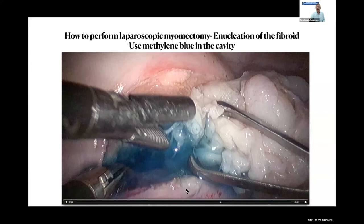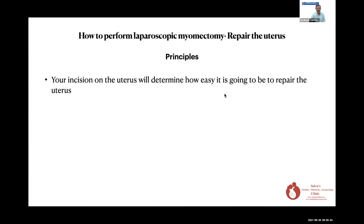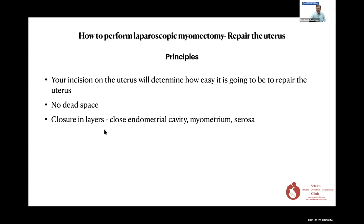Let me move on to repairing the uterus. Most of our time, besides morcellation, will be spent on uterine repair. The incision you make will determine how easy the repair is — a good incision means easy suturing. Try not to leave any dead space, especially if the patient wants to get pregnant, to prevent blood collection. Close in layers: if the endometrial cavity is open, close it first, then the myometrium, then the serosa — sometimes in four layers if necessary.